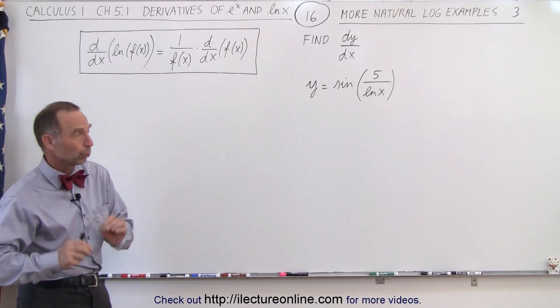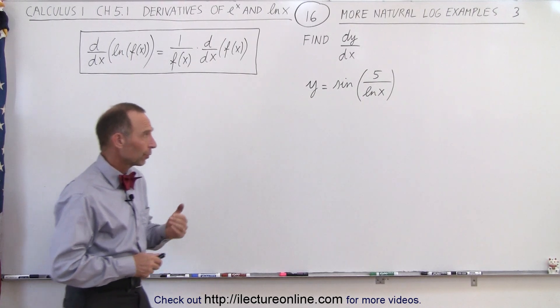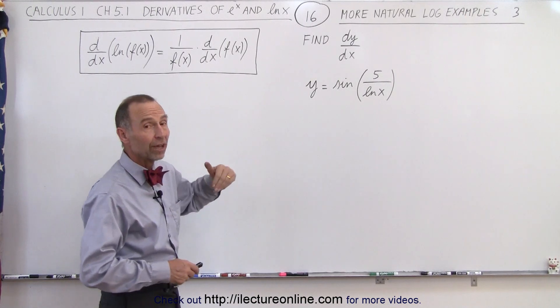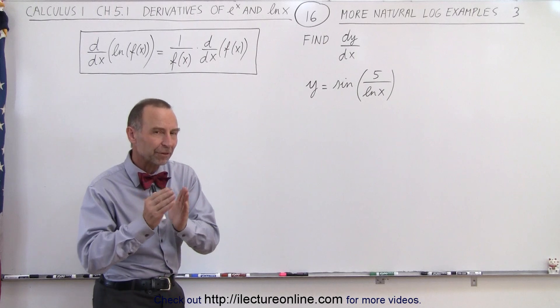Again, we follow the normal rules of finding derivatives. So here, we first start with the rules of sines. We take the derivative of sine, which would be the cosine, and then we take the derivative of the angle.